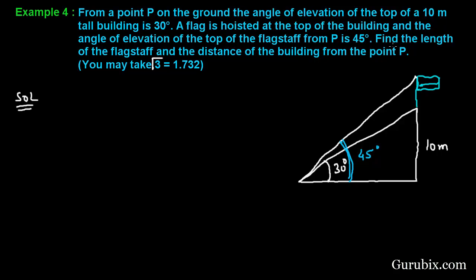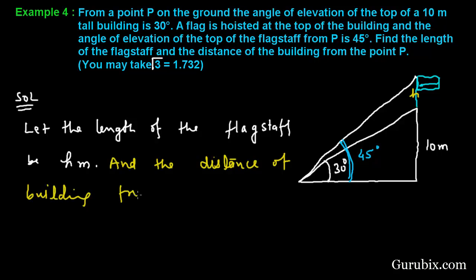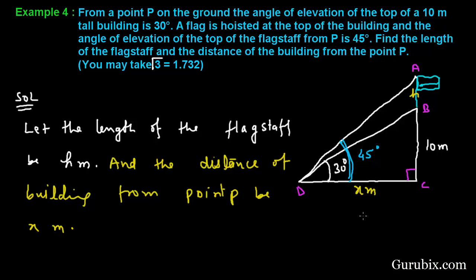We have to find the length of the flag staff. Let the length of the flag staff be h meters and the distance of the building from point P be x meters. So this distance is x meters. Now we shall name the points in the figure: suppose this is point A, this is point B, this is C, and this is point D. This angle is 90 degrees.